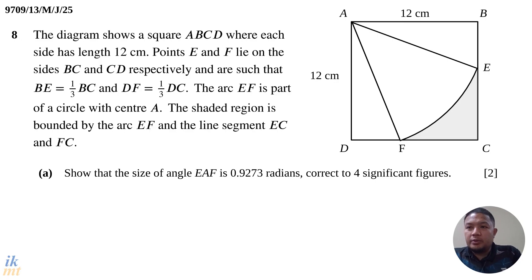I have received requests to do question 8, which is related to circular measure. So let's just go through the question and then the solution. The diagram shows a square ABCD where each side has length 12. Points E and F lie on sides BC and CD respectively.